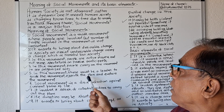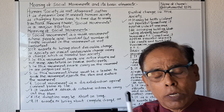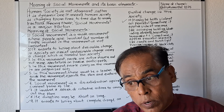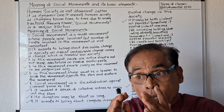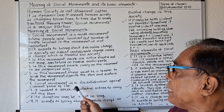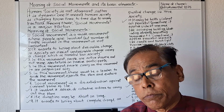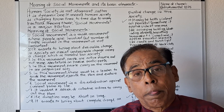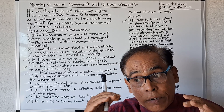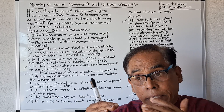Number five: in this movement, there must be a leader to guide the movement, execute the plan, and sustain the movement — keeping up the flow. Number six: social movement is a dissatisfaction against the current form of life. It is a reaction against the prevailing social life system; it is not satisfied with the current social life.